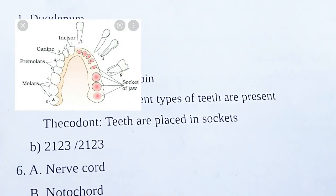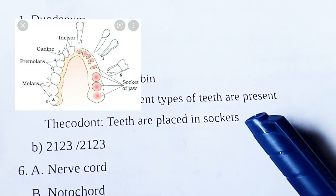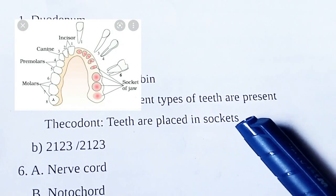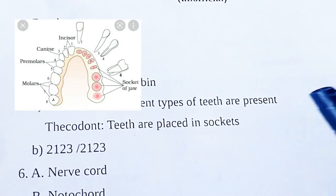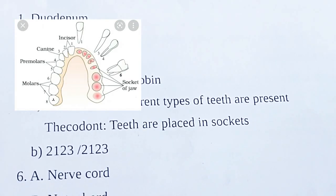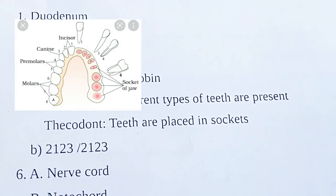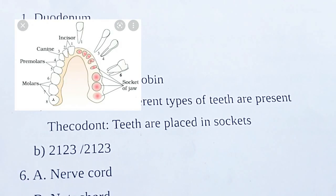Heterodont dentition: different types of teeth are present. Thecodont dentition: teeth are placed in sockets.